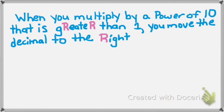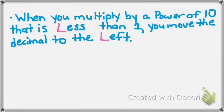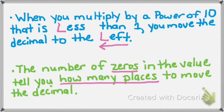When you multiply by a power of 10 that is greater than 1, the 'r' in greater reminds you that you'll move your decimal to the right. But when you multiply by a power of 10 that is less than 1, the 'l' in less reminds you to move your decimal to the left. And again, the number of zeros in the value tells you how many places to move that decimal.